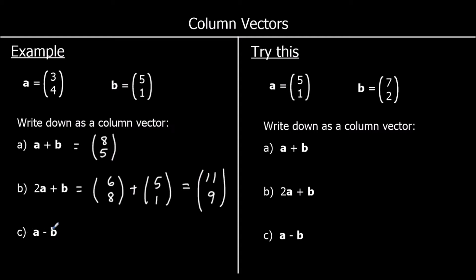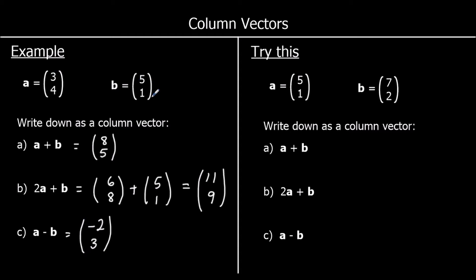How about A take away B? So we go A and then we do the opposite of B — we go backwards along B. We can just take away our x numbers. So 3 take away 5 is negative 2. And 4 take away 1 is 3. So if we did A and then went backwards along B, we would have gone 2 to the left and 3 up.